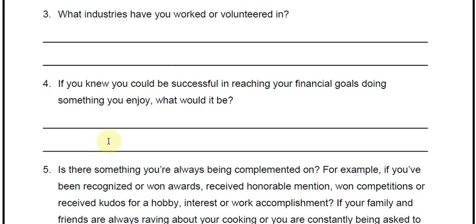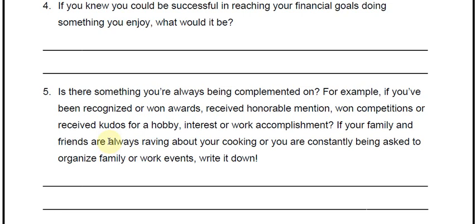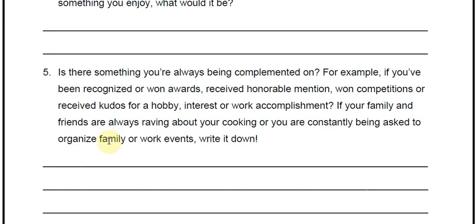If you knew you could be successful in reaching your financial goals doing something you enjoy, what would it be? That's a very important question because you want to build an online business that you enjoy. Number five — is there something you've always been complimented on? If you've been recognized, won awards, received honorable mention, won competitions, or received kudos for a hobby, interest, or work accomplishment, write that down. If your friends and family are always raving about your cooking or you're constantly being asked to organize work or family events, write it down. If you're consistently being complimented and asked to do certain things on a regular basis, that means people think you are good at it.